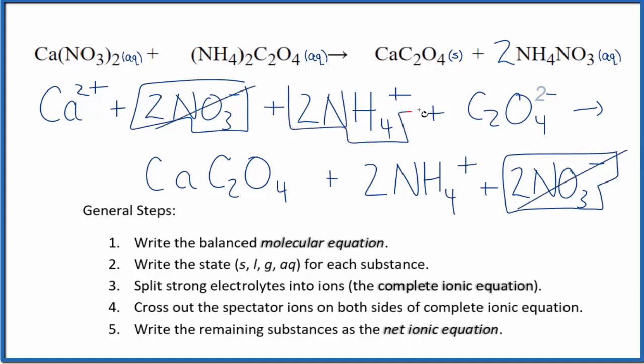In the reactants, we have two ammonium ions. And in the products, two ammonium ions. We can get rid of all of those. And what's left, that's the net ionic equation for calcium nitrate plus ammonium oxalate.